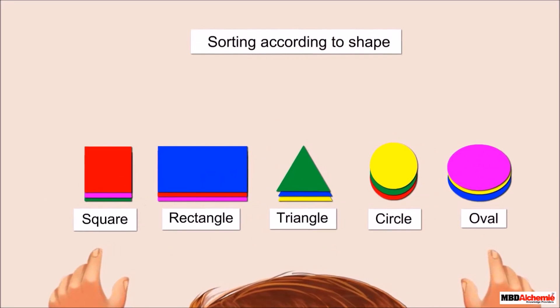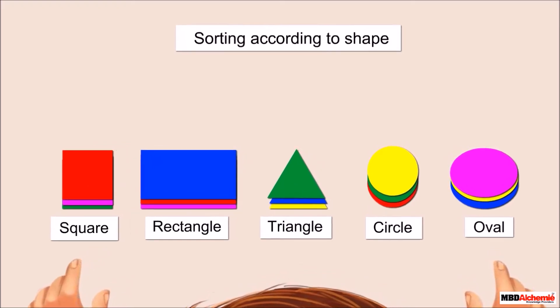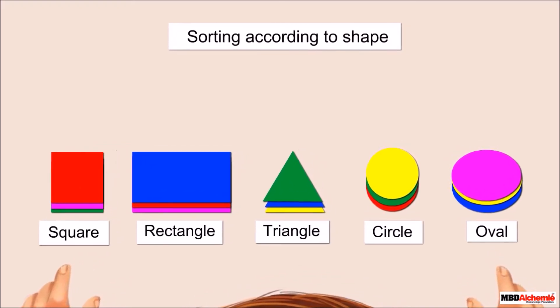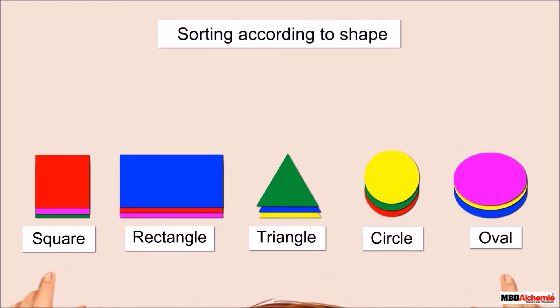This way, Neil has grouped all the cards according to their names. How many cards are there in each group? We see three cards of each shape in each group.